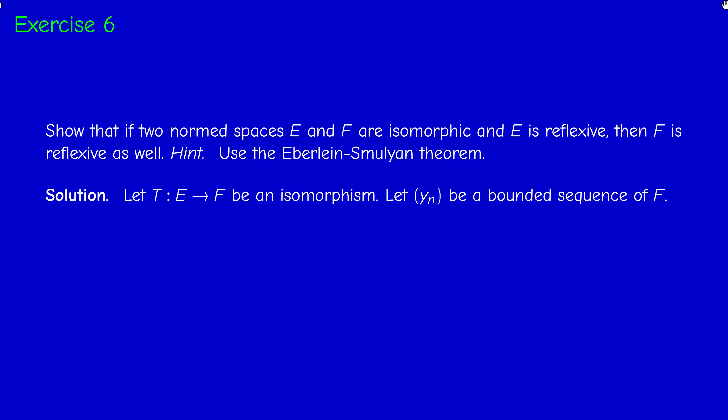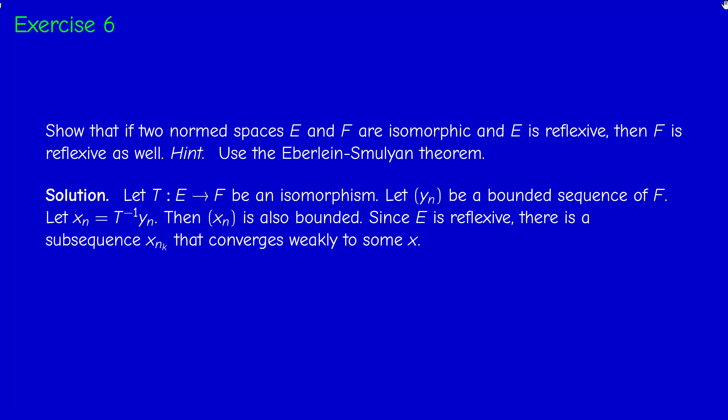We use the Eberlein-Smulian theorem. Consider an arbitrary bounded sequence Yn of F; we prove it contains a weakly convergent subsequence. If we take the image under the inverse of the isomorphism of Yn, we get a sequence Xn in E. Since T inverse is a bounded linear operator, it sends bounded sets to bounded sets, so if Yn is bounded, then Xn is also bounded. Since E is reflexive, by the Eberlein-Smulian theorem, Xn possesses a subsequence Xn_k converging weakly to some point X in E.